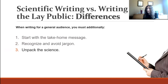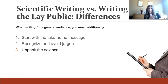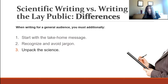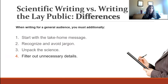You also have to unpack the science. Writing for a scientific audience is so much easier because you can assume prior knowledge — I don't have to explain a statistical test. But for a general audience, you have to unpack everything. I was writing a story where I mentioned pipetting, and the editor said I had to explain what pipetting means. I took it for granted that people would know — but no, I had to sit there and explain it.